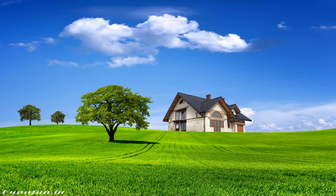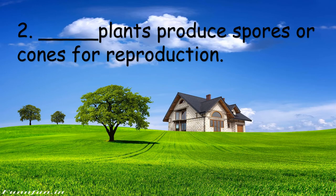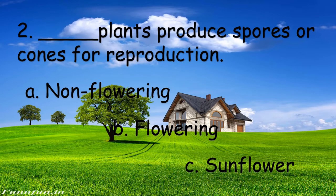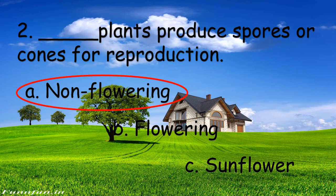Next, number two: blank plants produce spores or cones for reproduction. What is the correct answer — A, B, or C? The correct answer is A. Non-flowering plants produce spores or cones for reproduction. Very good!